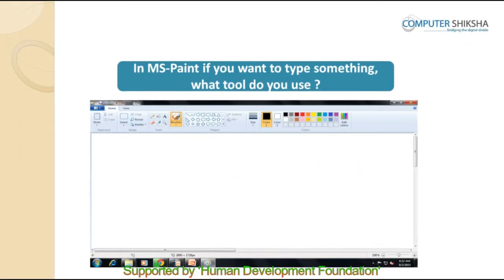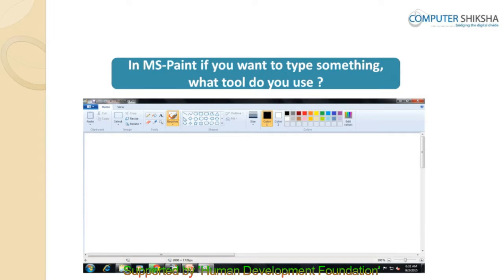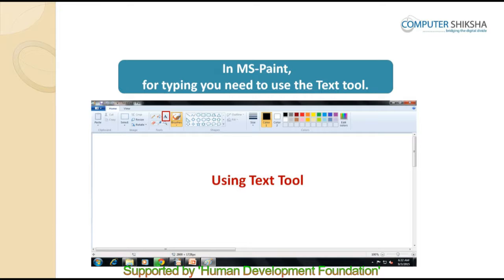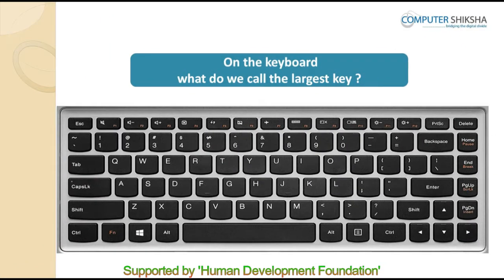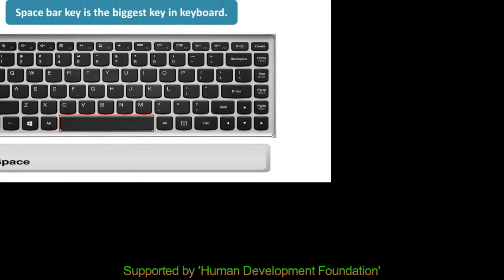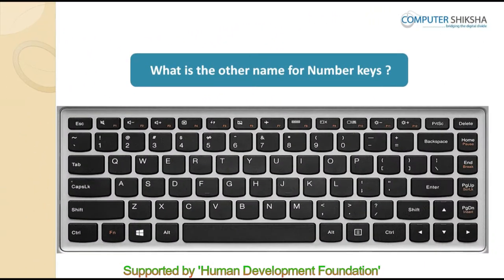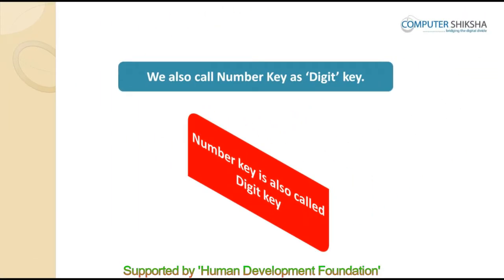In MS Paint, if you want to type something, you use the text tool. On the keyboard, the largest key is called the space bar. Number keys are also known as digit keys.